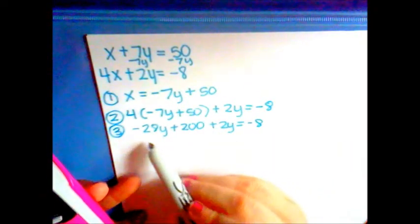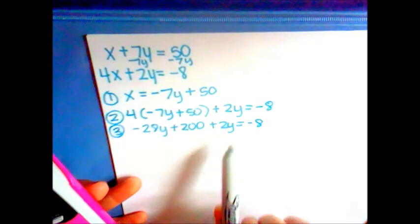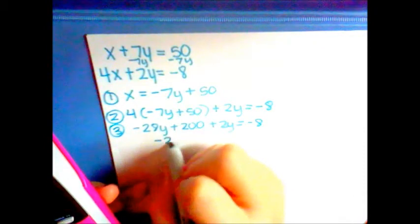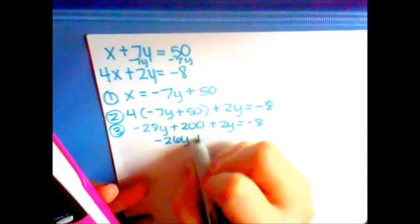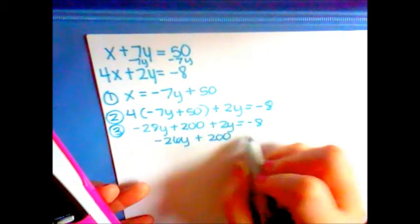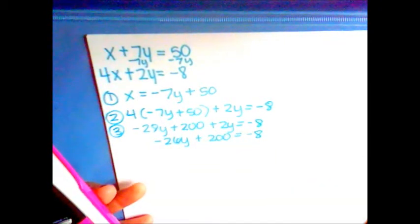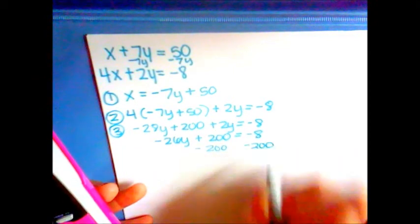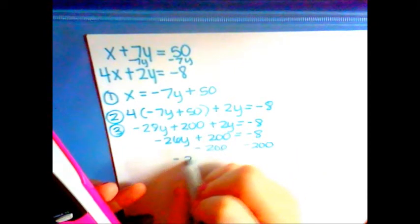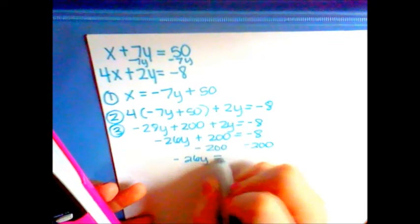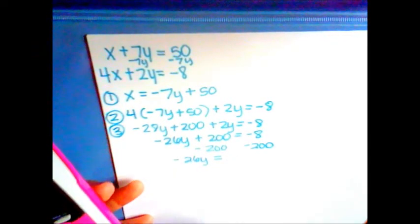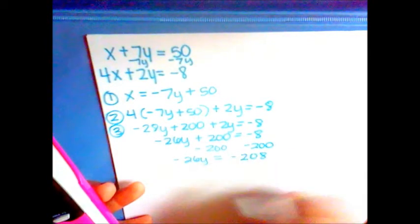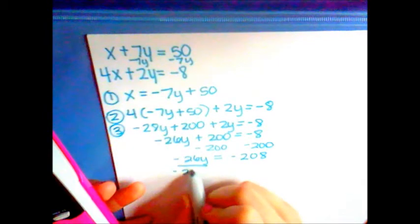We then take the negative 28y plus the 2y to get negative 26y plus 200 equals negative 8. Subtract 200 from both sides to get negative 208. We divide by negative 26 to get y equals 8.